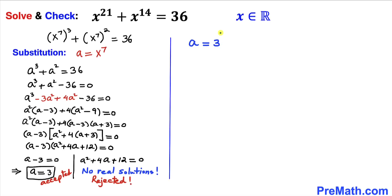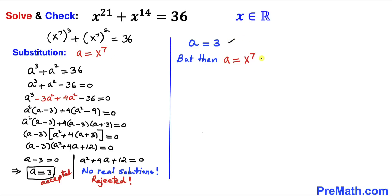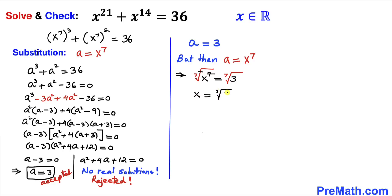Taking a = 3 and recalling from our substitution that a = x⁷, we compare these two equations to get x⁷ = 3. Taking the 7th root of both sides to undo x⁷, the power 7 and the 7th root cancel each other, giving x = ⁷√3 as our solution.